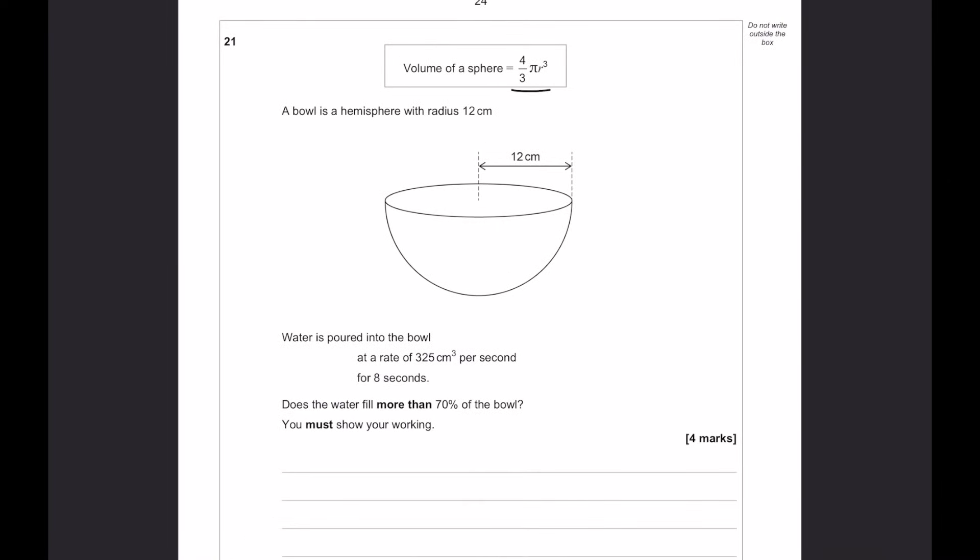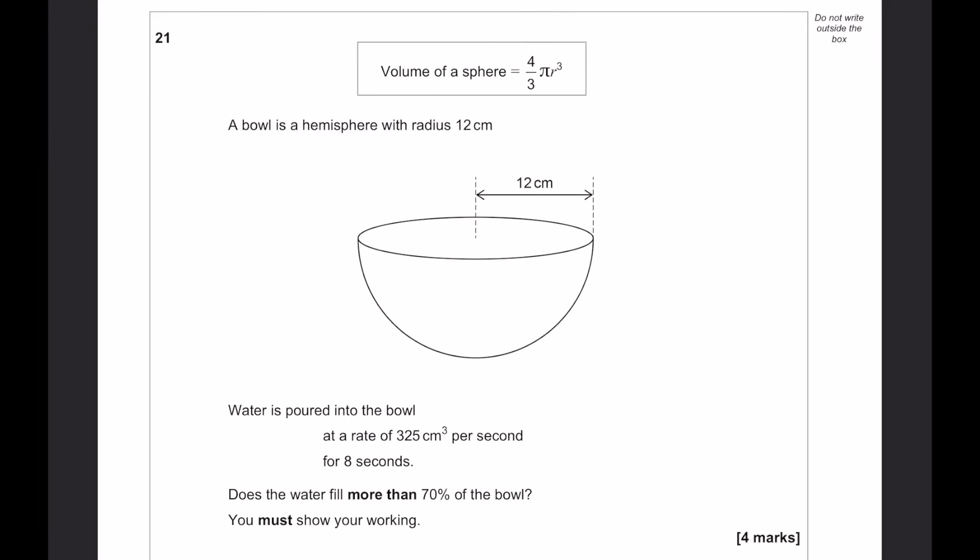Volume of a sphere, we're given the equation, which is nice. Bowl is a hemisphere, so half a sphere, with a radius of 12. Now, before I even read the rest of the question, if they've given you the formula for the volume of a sphere, and you know the radius, you're probably going to have to use the volume. So, I'm just going to do that quickly before, and all I'm putting into my calculator is this. I'm putting that in my calculator, it gives me 7238.23, but obviously, because this is a half sphere, we have to divide that by 2. And that is now going to be 3619.12.